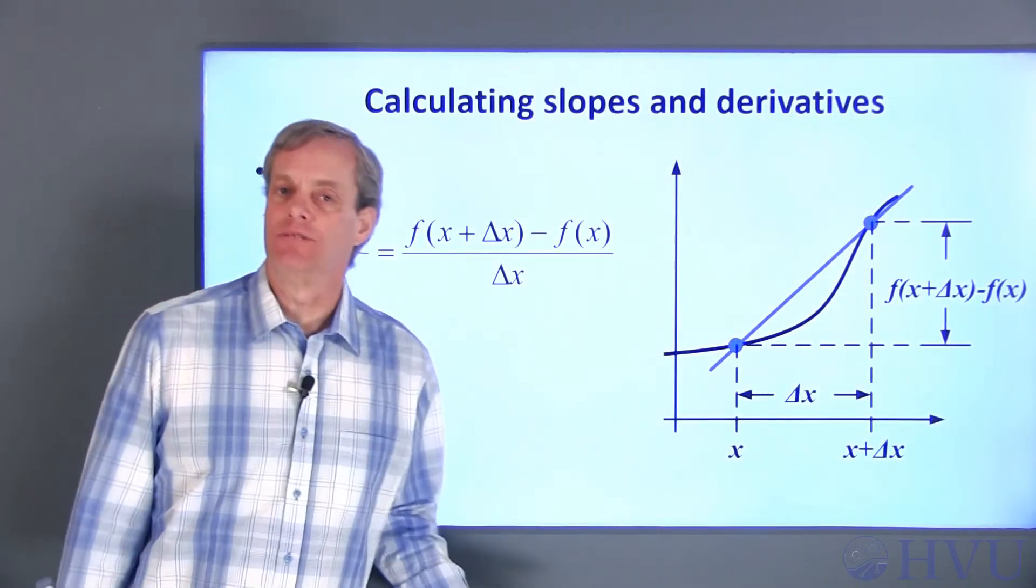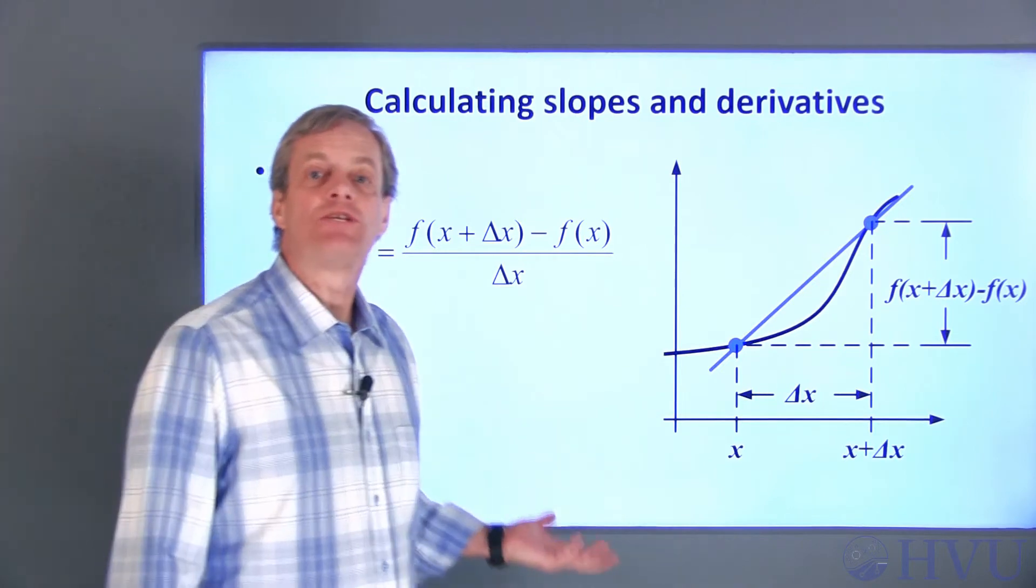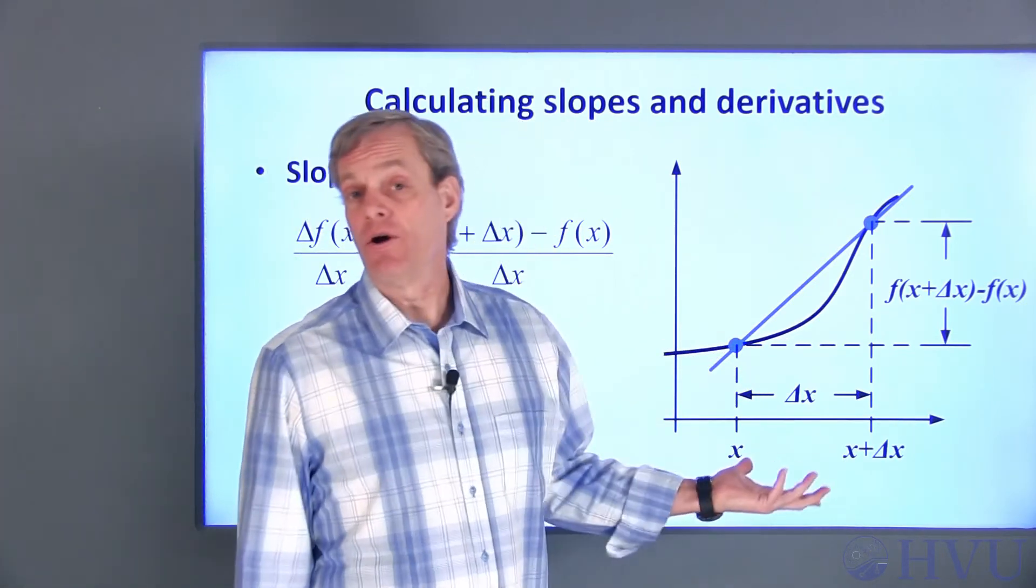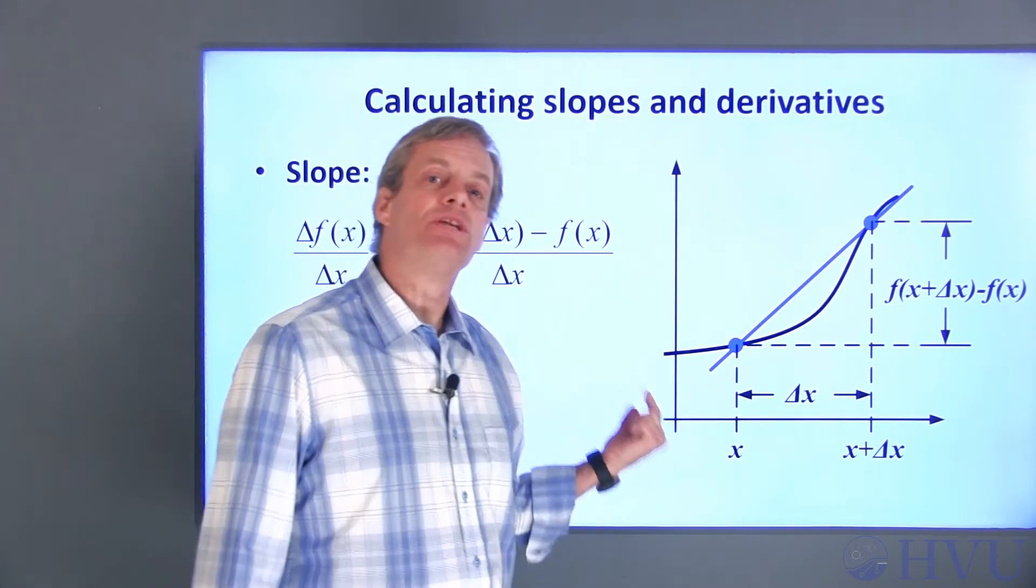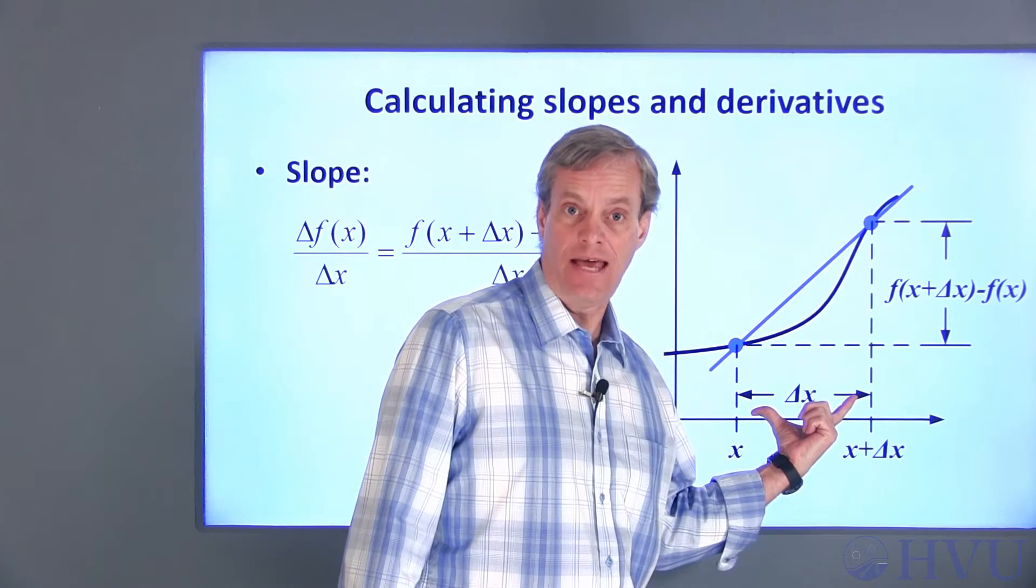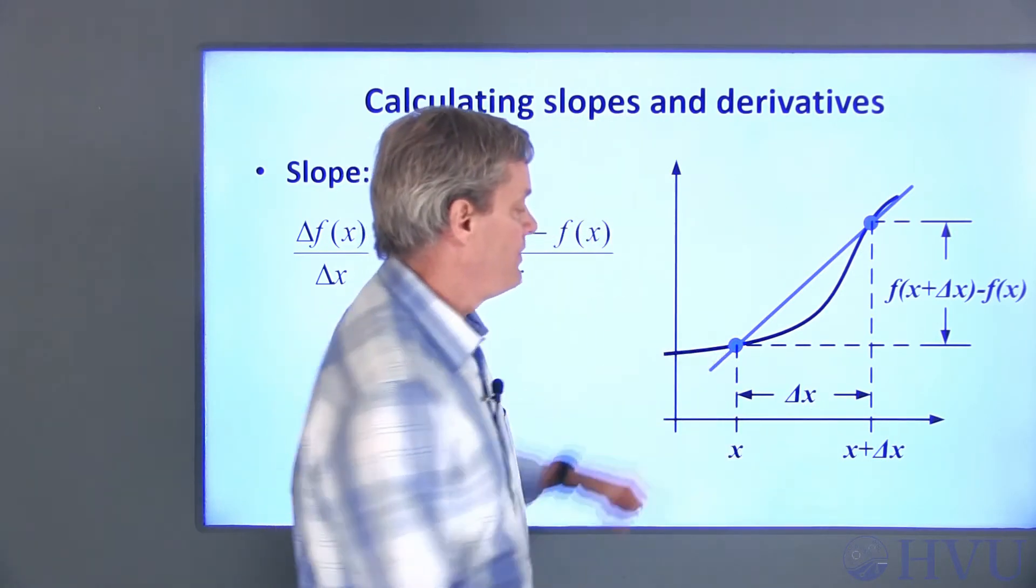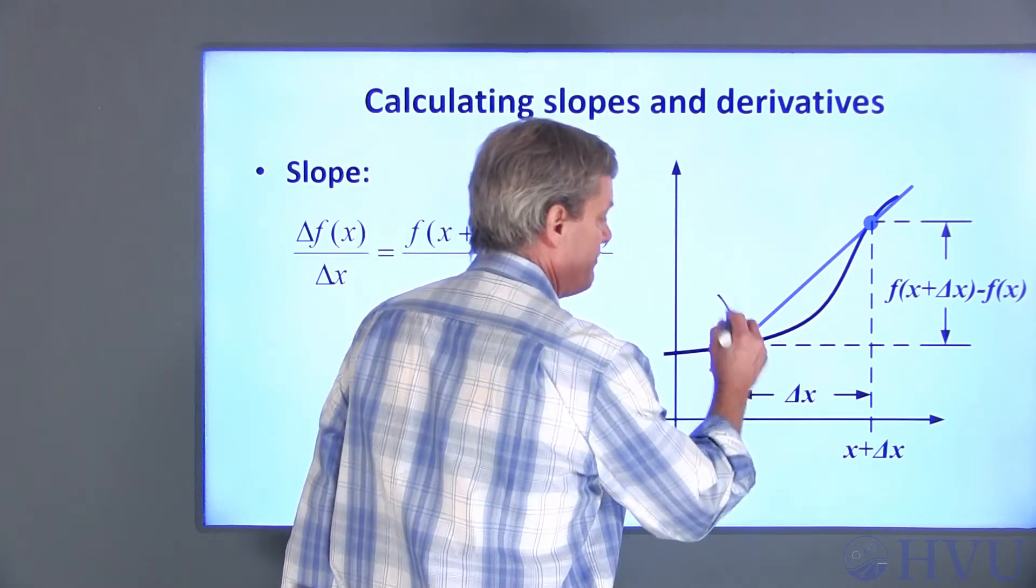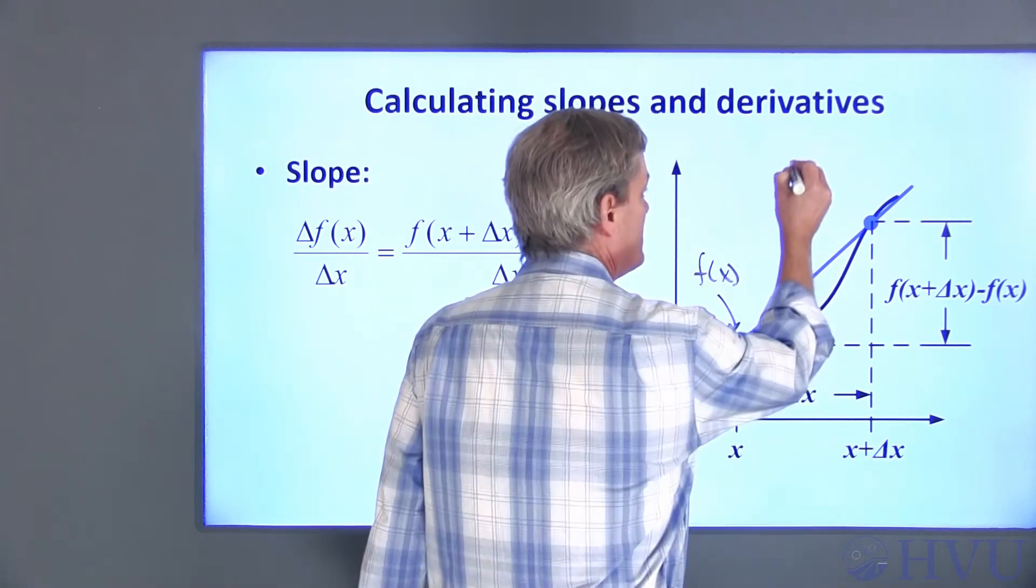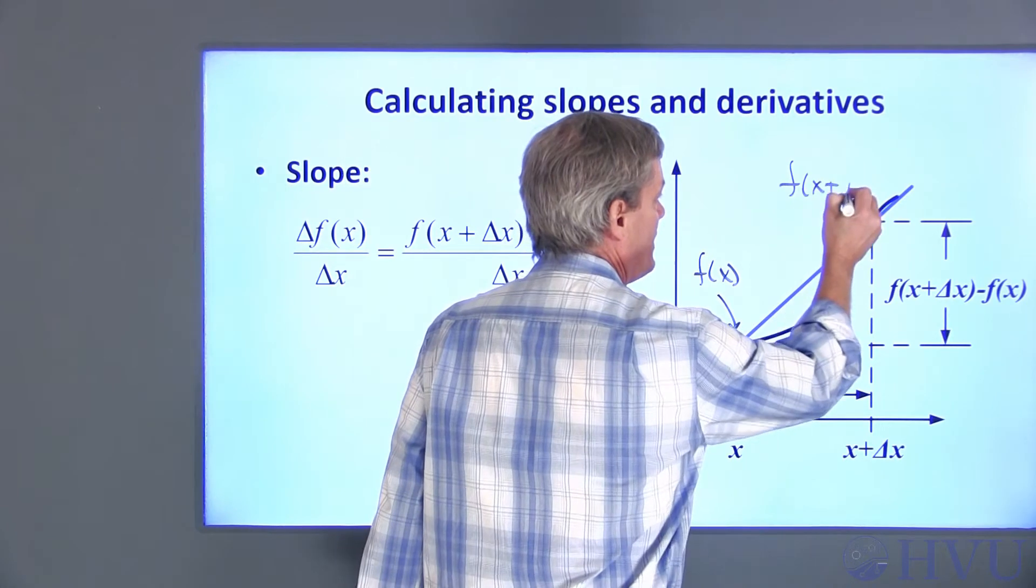Now let's add some mathematical details to our argument. We want the slope of the curve at a particular value of x. So as a first guess, choose another point on the curve separated from x by some distance delta x. The value of the function at x is just f of x and the value of the function at x plus delta x is f of x plus delta x.